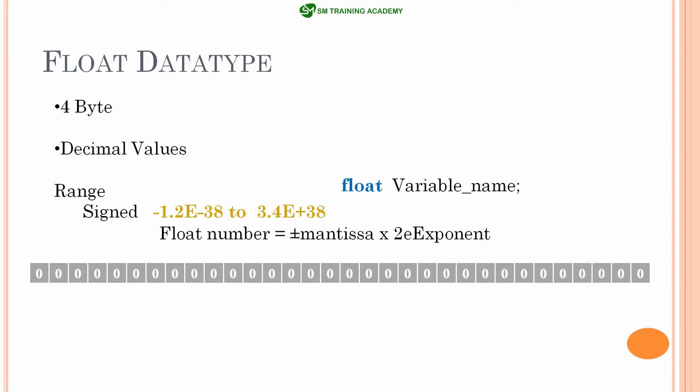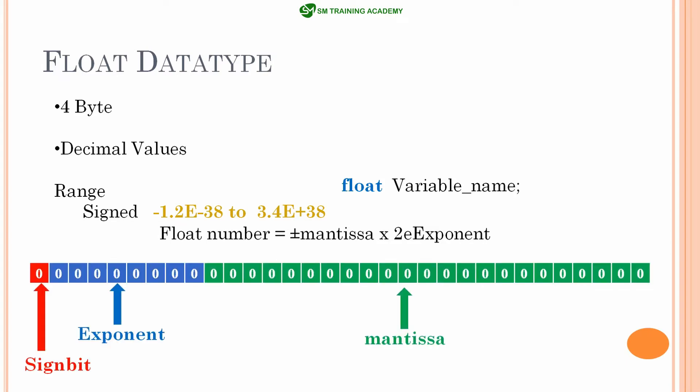When you multiply the mantissa and exponent parts, you get the floating point number back. The 32 bits of CPU memory for a floating point number are subdivided into three parts: the sign bit (1 bit, MSB), the exponent (8 bits), and the mantissa (remaining 21 visible bits).